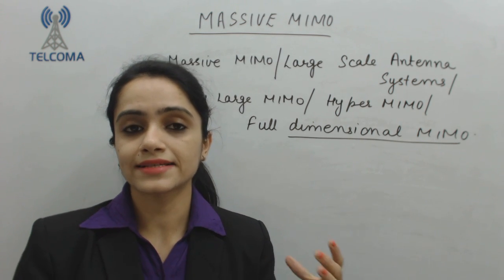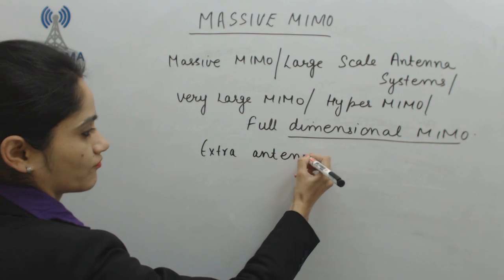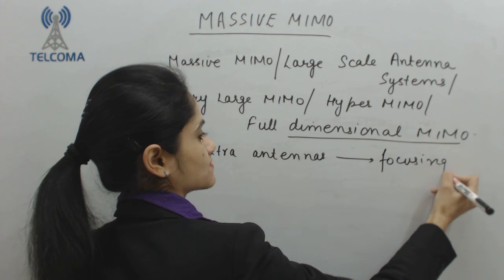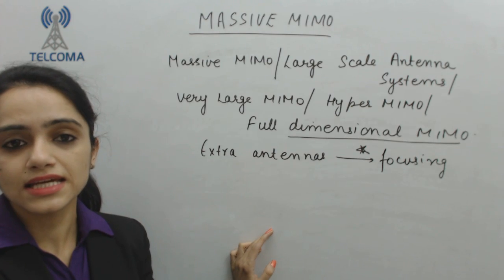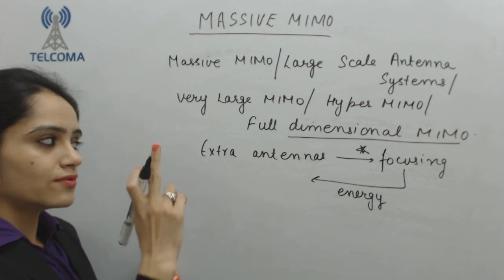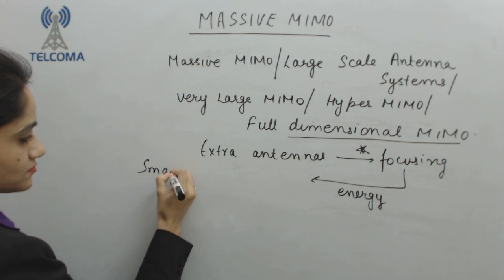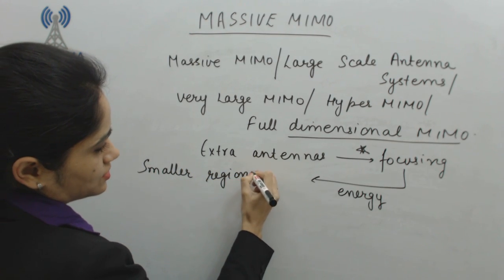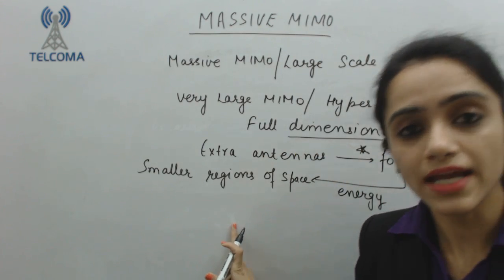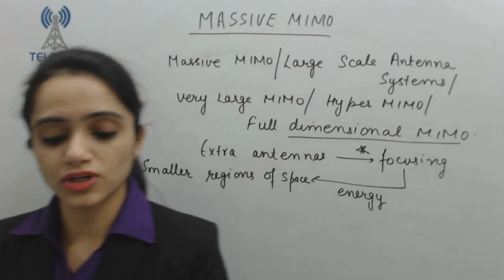In massive MIMO, or large-scale antenna systems, we require extra antennas. The main aim is to focus energy. We require extra antennas to help focus energy into smaller regions of space.